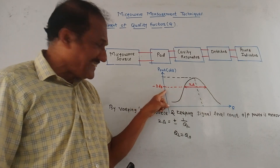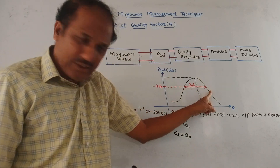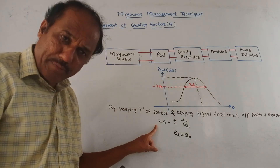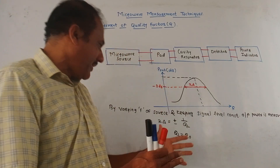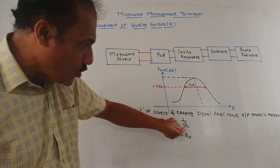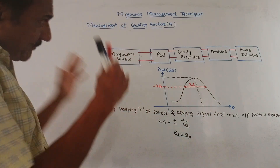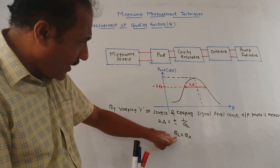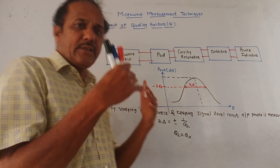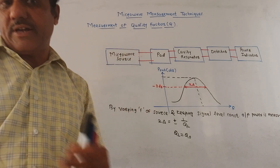The graph plots output power in dB versus frequency. The 3 dB point is identified, and the gap between the two points at the 3 dB level is measured — denoted as 2Δ, which is the half-power bandwidth. This half-power bandwidth 2Δ is given by ±1/Q_L, where Q_L is the quality factor with load. If everything is ideal, Q_L equals Q₀, where Q₀ is the quality factor without load — the quality factor of the micro source itself.